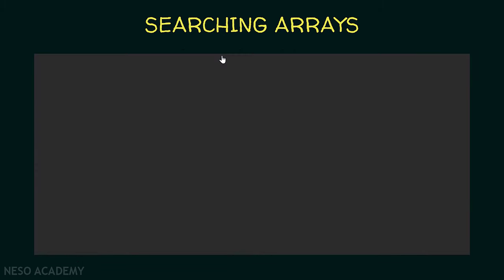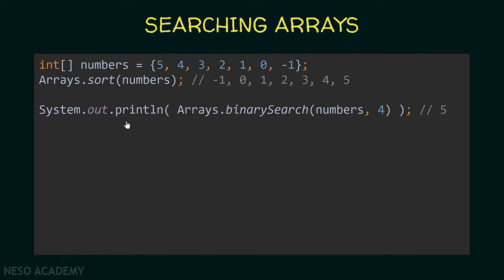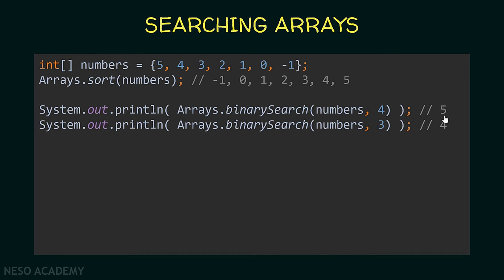Suppose we have an integer array called numbers. Since we need to use binarySearch, we first sort the array using the sort method. Now searching for the integer four — we will see 5 printed, because in the sorted array, four is at index five. Searching for the element three — we will see 4 printed, because the index of three is four.